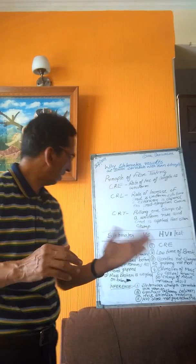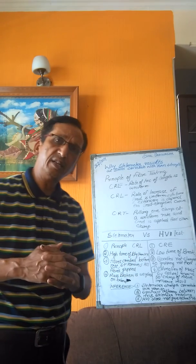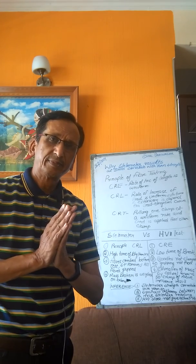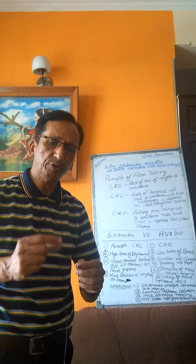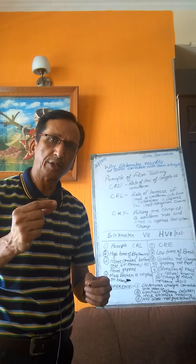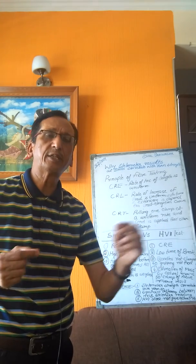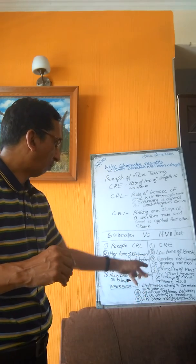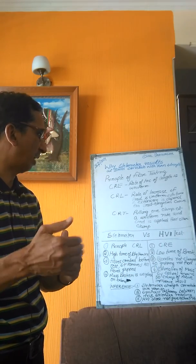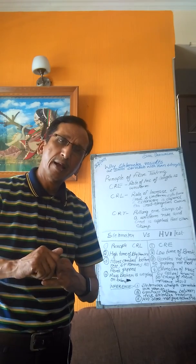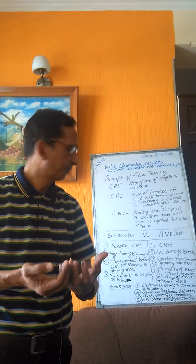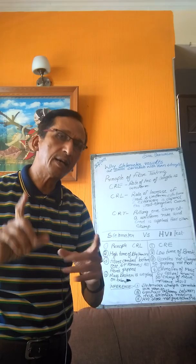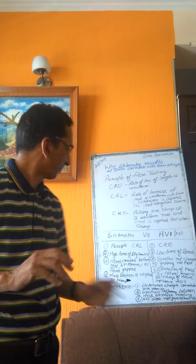Another difference is that in Stelometer, after breaking takes place, the broken mass called the tuft is taken out and weighed physically on a balance. In HVI, the mass is estimated by optical means, and in that case crimp also contributes and influences the results. So HVI results are not actual measurements — they are estimates.